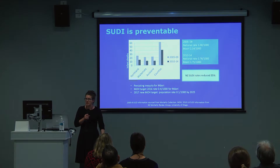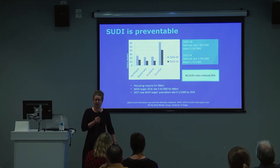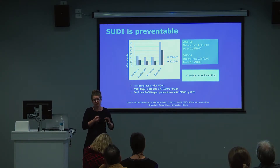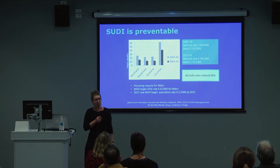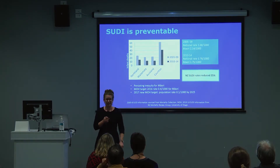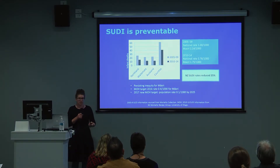We're still having around eight to ten SUDI a year here in Counties Manukau, and that's eight to ten babies too many. Recently the government announced they've got five million a year to spend on SUDI interventions, and they want to get the rate down to 0.1 per thousand by 2025. We think we can do this if we're strategic, very targeted, and can implement the strategies we now have in place.